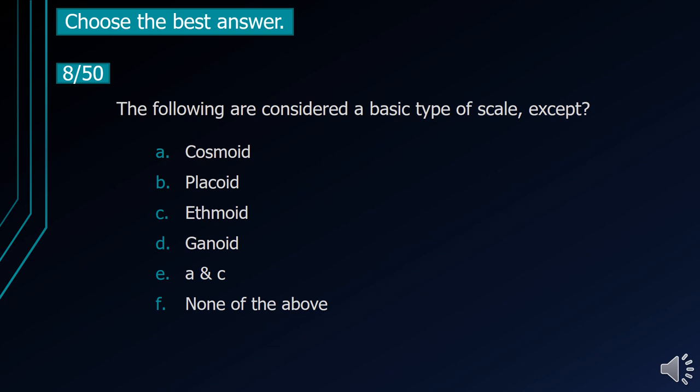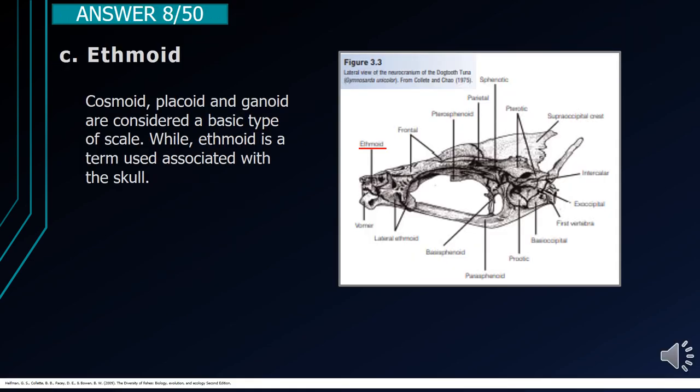Number 8. The following are considered a basic type of scale, except: A. Cosmoid. B. Placoid. C. Ethmoid. D. Ganoid. E. A and C. F. None of the above. The correct answer is letter C, Ethmoid. Cosmoid, Placoid, and Ganoid are considered basic types of scale. Ethmoid is a term associated with the skull.